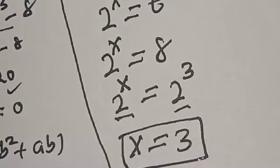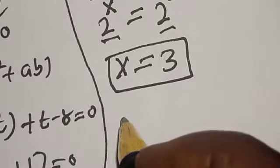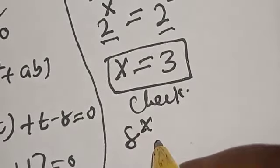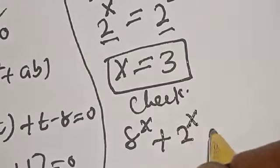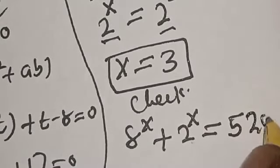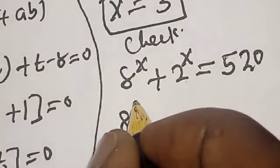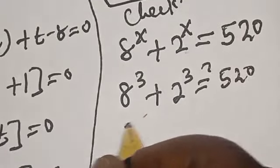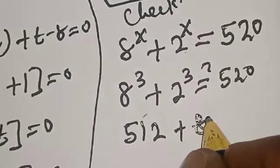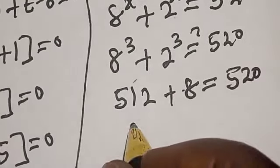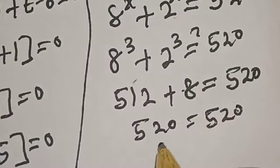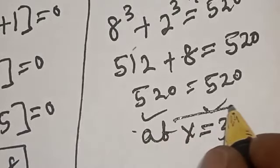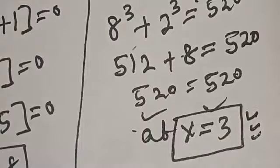We can verify our answer. Substituting x equals 3 into the original equation: 8 raised to power 3 plus 2 raised to power 3 must equal 520. 8 raised to power 3 is 512, and 2 raised to power 3 is 8, giving 512 plus 8 equals 520. Left-hand side equals right-hand side, confirming x equals 3. If you enjoyed the class, please don't forget to like, share, comment and subscribe. Thank you.